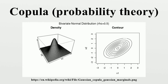Sklar's theorem, named after Abe Sklar, provides the theoretical foundation for the application of copulas. Sklar's theorem states that every multivariate cumulative distribution function of a random vector can be expressed involving only the marginals, as H(x) = C(F₁(x₁), ..., Fd(xd)), where C is a copula.